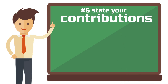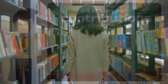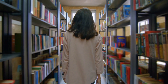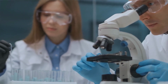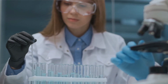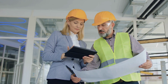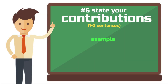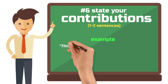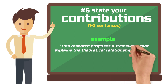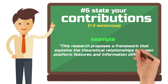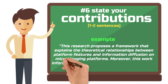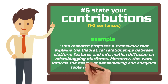Step 6: Contributions — how can researchers, or in some cases practitioners, benefit from your work? One to two sentences. How would dealing with the research problem advance the knowledge? What part of the literature would it enrich, and how — theoretically, methodologically? And how might possible findings help practice, for example, professional individuals or organizations? Here you need to sell your paper a little bit to the audience. For the contribution sentences, you could write: 'This research introduces a framework that explains the theoretical relationships between platform features and information diffusion on microblogging platforms. Moreover, this work informs the design of sense-making and analytics tools for social media streams.'